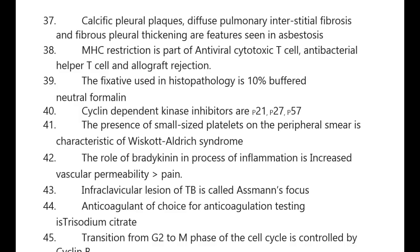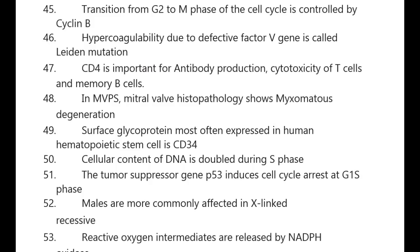The presence of small-sized platelets on the peripheral smear is characteristic of Wiskott-Aldrich syndrome. The role of bradykinin in the process of inflammation is increased vascular permeability and pain. Intracavitary lesion of TB is called Assmann's focus. Anticoagulant of choice for anticoagulation testing is trisodium citrate. Transition from G2 to M phase of cell cycle is controlled by cyclin B.